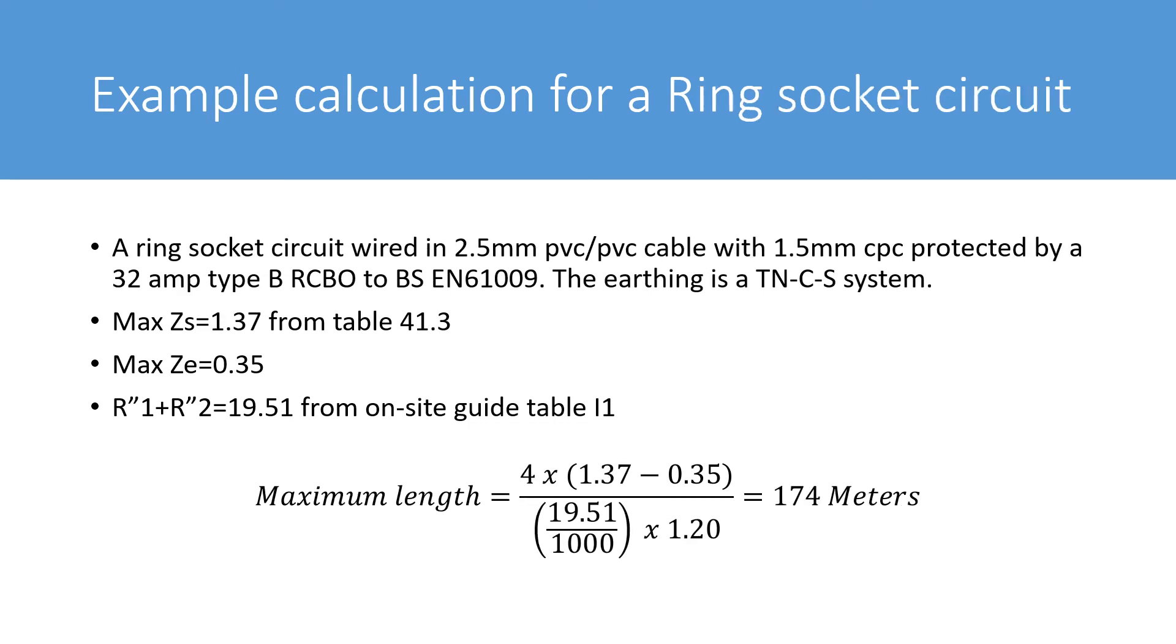So here we have another example calculation, but this time for a ring socket circuit. A ring socket circuit wired in 2.5 mm PVC-PVC cable with a 1.5 mm CPC protected by a 32 amp type B RCBO to BSEN61009. The earthing is a TNCS system.